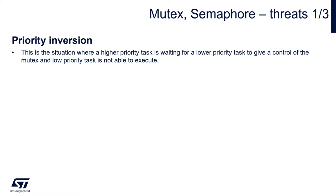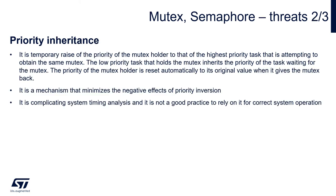Let's have a closer look at some terms related to semaphores and mutexes. The first one is priority inversion. This term describes the situation where a task with higher priority is waiting for a lower priority task to give control of an OS component — like give a semaphore or send data to a queue — and the low priority task is not able to execute. In such a case, it is important to set the priorities of the tasks carefully, or use timeouts and monitor return values of functions which are trying to get access to the resource. The second term is priority inheritance — it is the answer to the previous problem, implemented within mutexes.